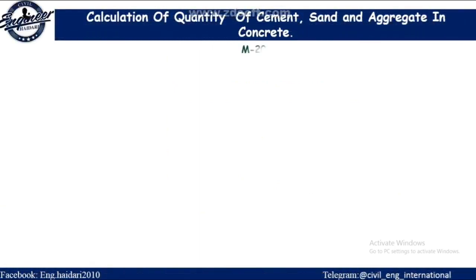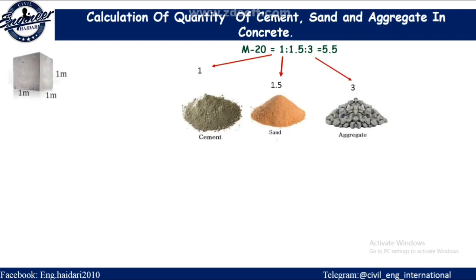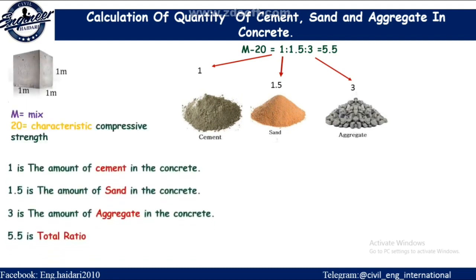Calculation of quantity of cement, sand, and aggregate in concrete for M20. M20 = 1:1.5:3, total ratio = 5.5. M stands for mix and 20 is the characteristic compressive strength. 1 is the amount of cement, 1.5 is the amount of sand, 3 is the amount of aggregate, and 5.5 is the total ratio.